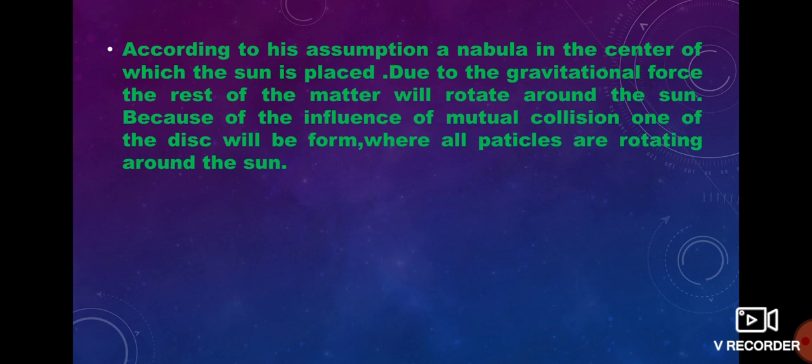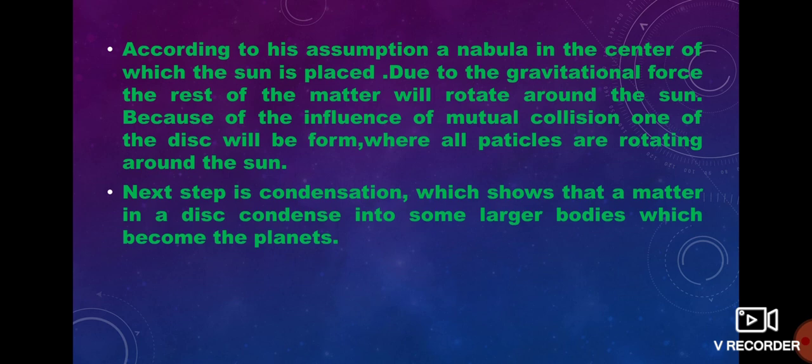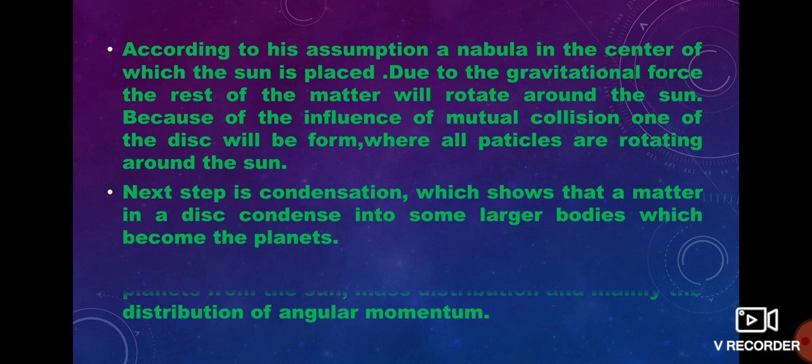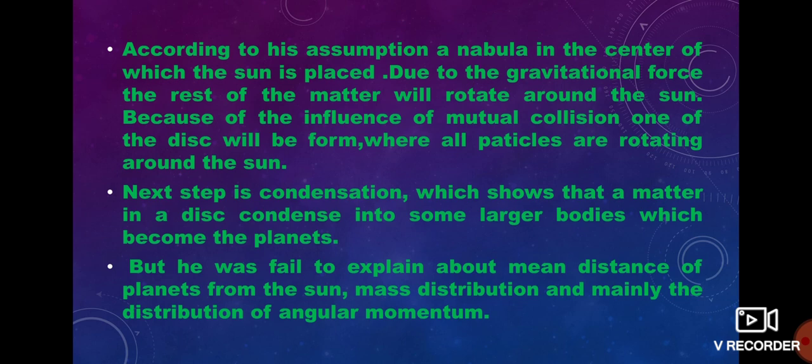According to Kant's assumption, a nebula with the Sun placed at its center would, due to gravitational force, cause the rest of the matter to rotate around the Sun. Because of mutual collisions, a disc would form where all particles rotate around the Sun. The next step is condensation, which shows that the matter in the disc condenses into larger bodies which become planets in future. But he failed to explain the mean distance of planets from the Sun, mass distribution, and mainly the distribution of angular momentum.